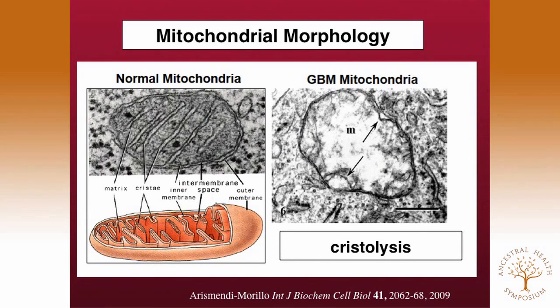When we look at mitochondria of tumor cells, in a normal electron micrograph you can see the cristae. The cristae contain the proteins of the electron transport chain, which generate most of the energy in our bodies. But in this mitochondria of a glioblastoma multiforme — a brain tumor — you can see it's cristae-less. We never find completely normal mitochondria in any tumor cell, and there's no way these tumor cells can produce energy through oxidative phosphorylation if they don't have the structures needed to do this.